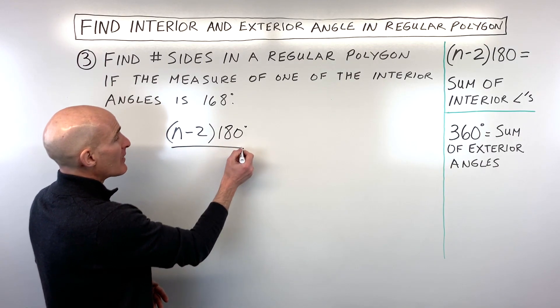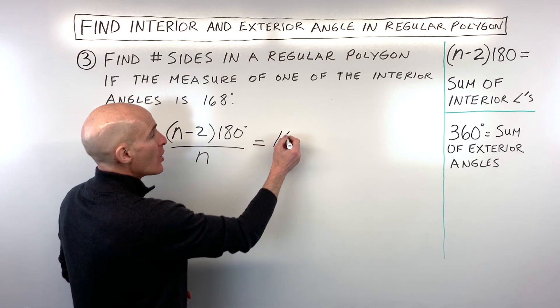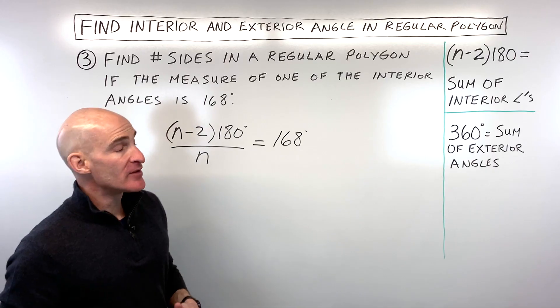The first way is n minus 2 times 180 is the sum of all the interior angles, but if we divide by the number of interior angles, that'll give us the measure of just one interior angle. So let's go ahead and solve this equation.